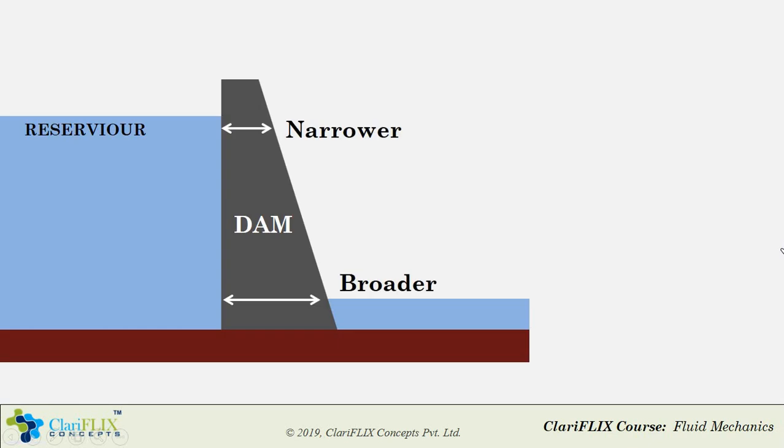So now I hope you might have got the answers to the questions raised in the beginning. Why are dams broader at the bottom and narrower at the top? As per the hydrostatic law, the pressure acting on the wall of the dam increases linearly as we go deeper and will be maximum at the bottom. Therefore, in order to resist the effect of larger pressure forces at higher depth, the dams are broader at the bottom.